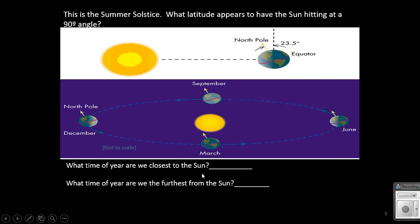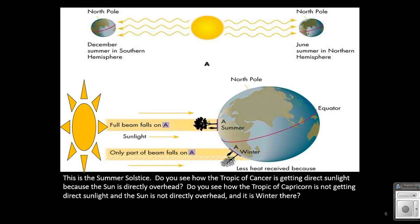Once again, we talked about how we're closest to the Sun actually in December, and we're furthest away from the Sun in June. This would be summertime in the Northern Hemisphere, showing that direct solar radiation hitting most strongly up towards the Tropic of Cancer, and that is why we get more heat in the summertime.